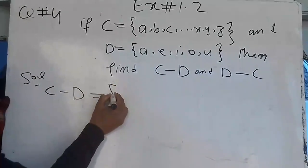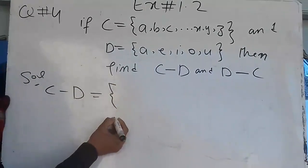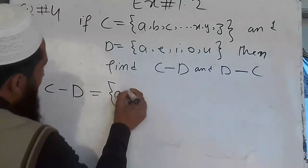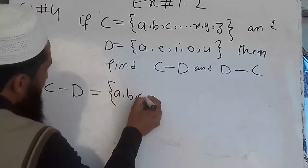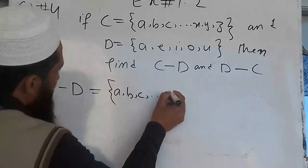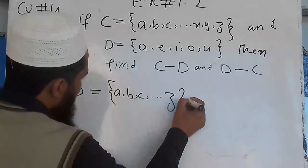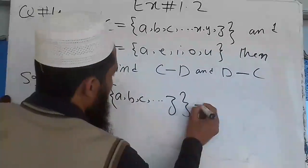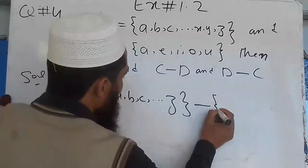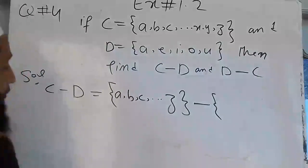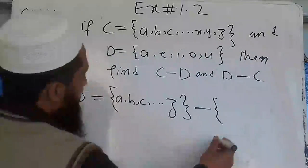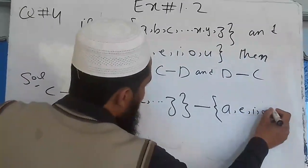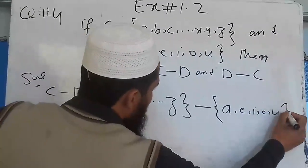D is the set {A, B, C, ... up to Z} — all letters. The difference D difference C: C is the set of vowels {A, E, I, U}.